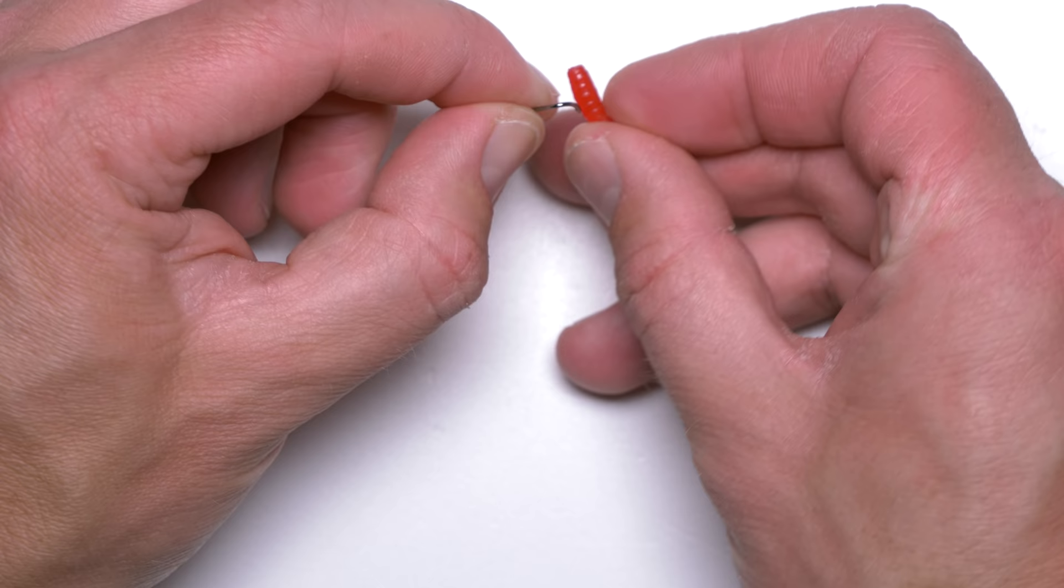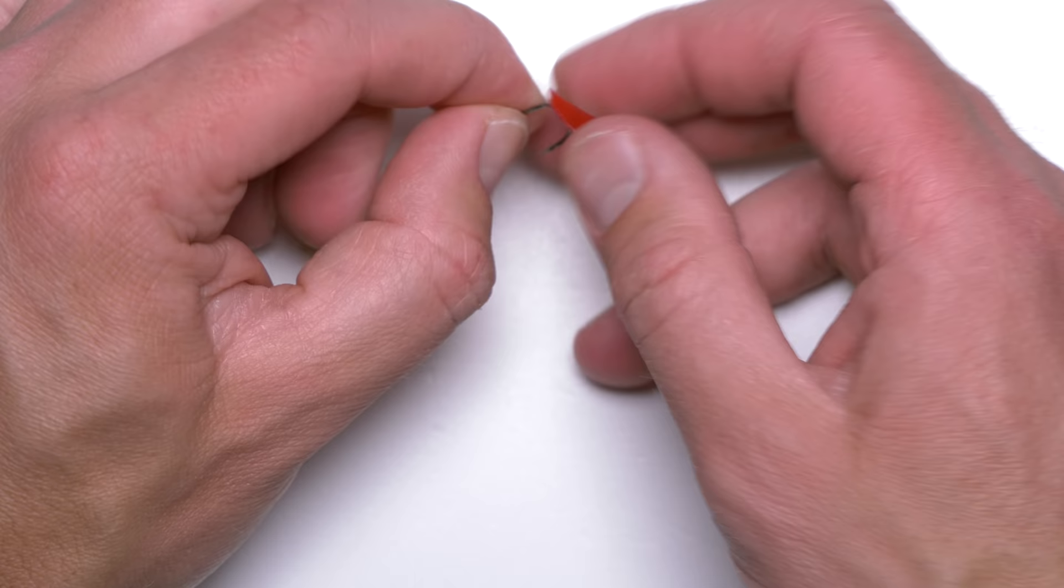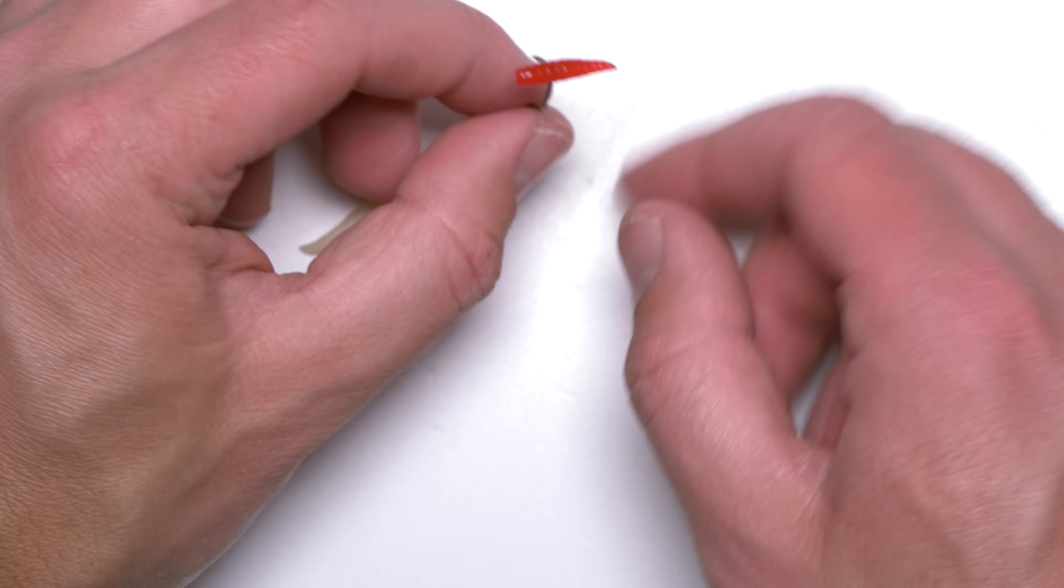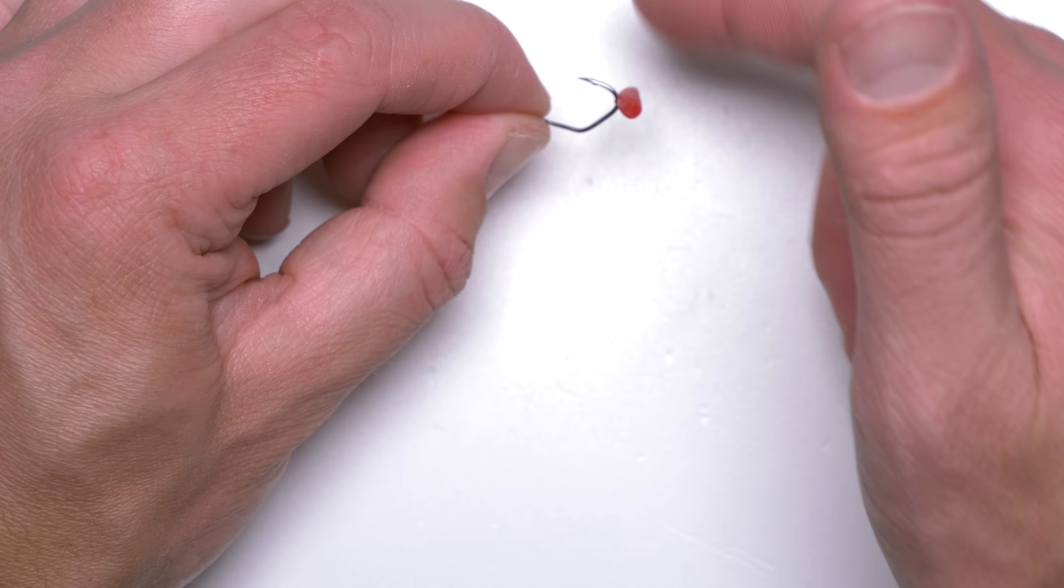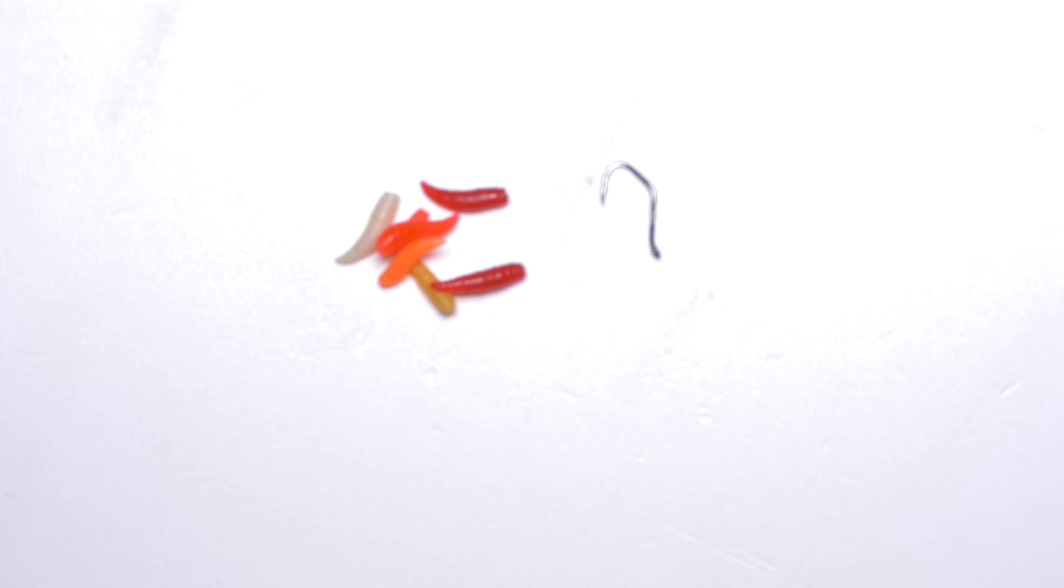But still I would say that for me better way to achieve the same thing is by hooking that. Just because it's easier to thread the maggot on like that. And I think that it works a little bit better because the maggot is a little bit further away from the hook point. So the hooking properties I believe are better but of course it depends on the hook size you are using etc.